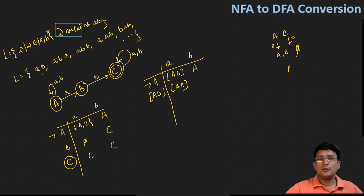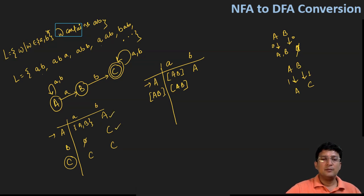Now showing the transition of AB state with symbol 'b'. Referring to the NFA transition table: A on 'b' goes to A, and B on 'b' goes to state C. Taking the union of these two gives AC — a new state. So AB on 'b' goes to AC.